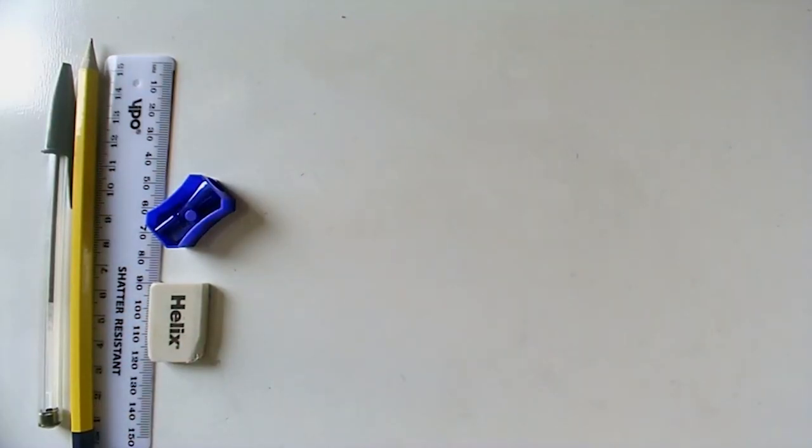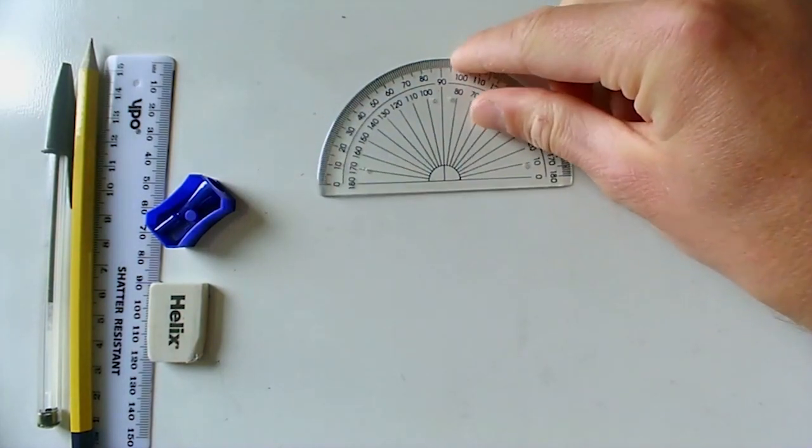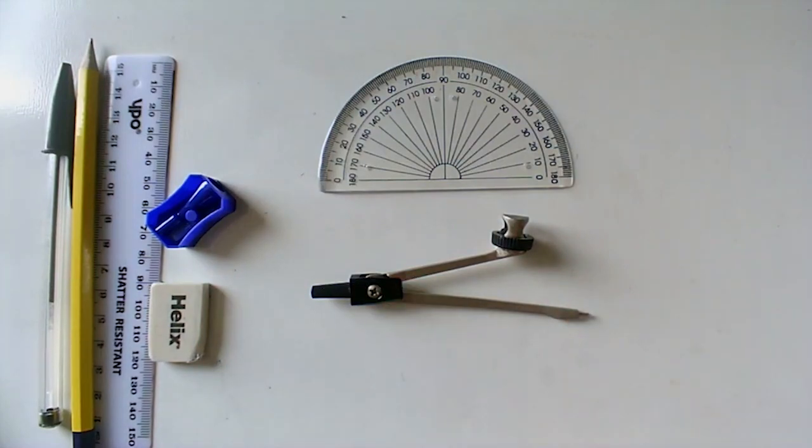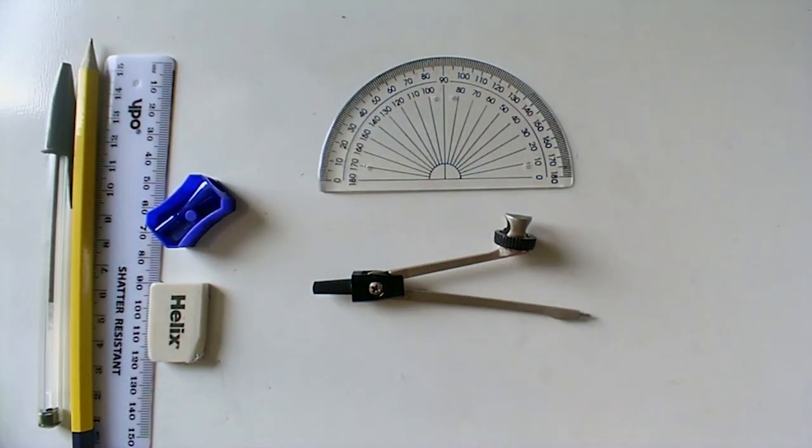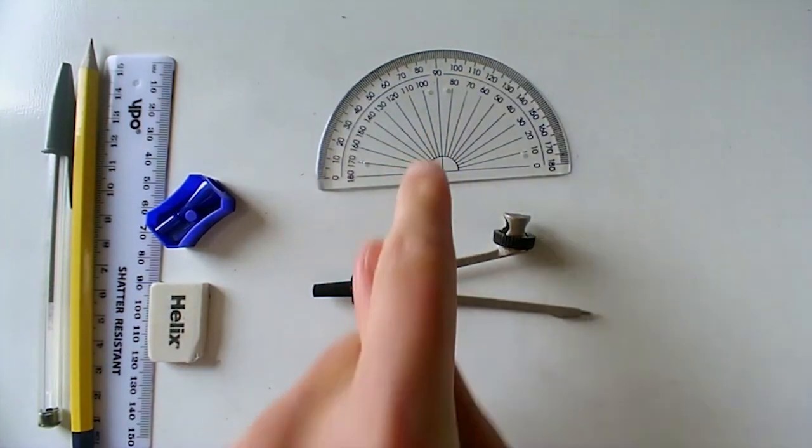To go along with this basic stationery, there are two maths specific bits of stationery that they should also have, and that is a protractor from 0 to 180 degrees for measuring angles and then also a pair of compasses which is useful for all the construction work that they might do in their GCSE.